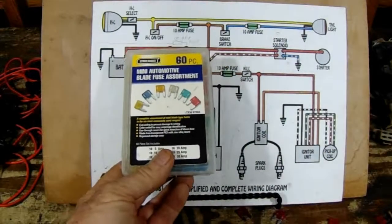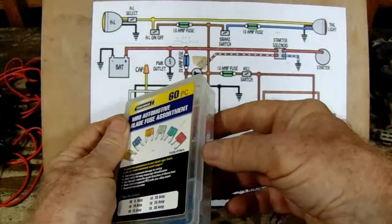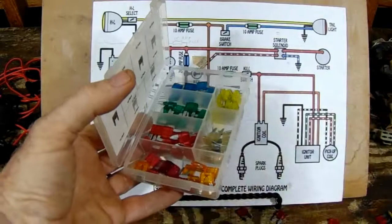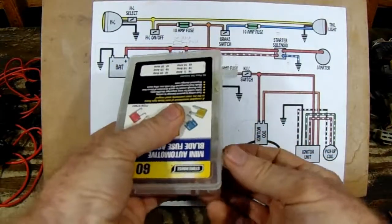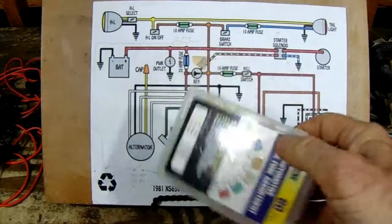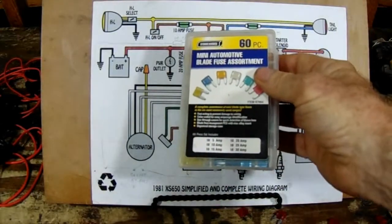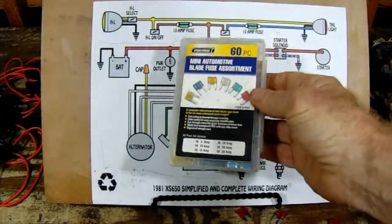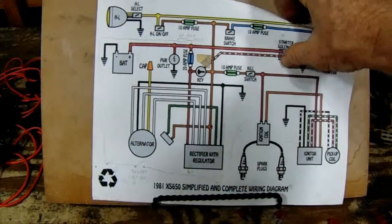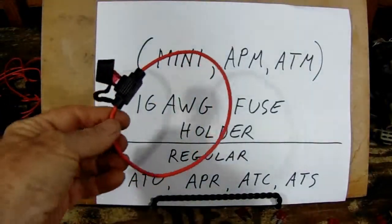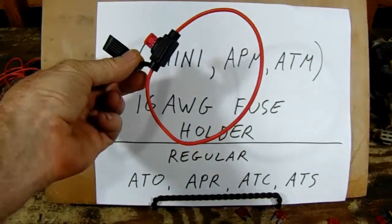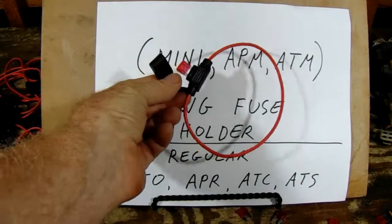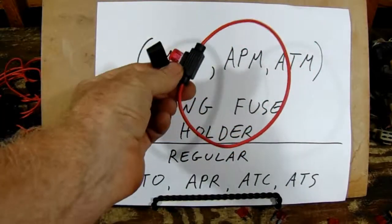You can go to Harbor Freight and buy a mini blade fuse assortment for $8, but you get all these sizes that you don't need. The only two sizes you need for an XS650 are 10 and 20. If you buy them on eBay, if you're willing to wait for them to come from China, you can get these fuses for practically nothing. The same goes for the fuse holder. If you're willing to wait for these fuse holders to come from China, you can buy 10 for less than a dollar each. If you go to the auto parts store, these are going to cost about $5 each.